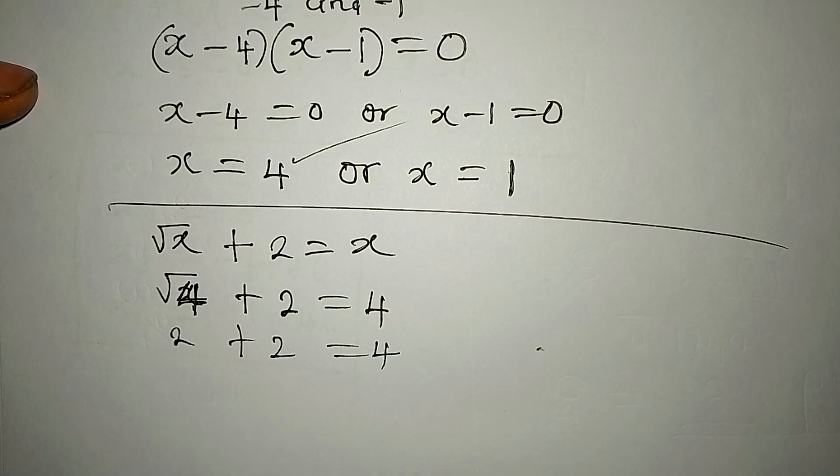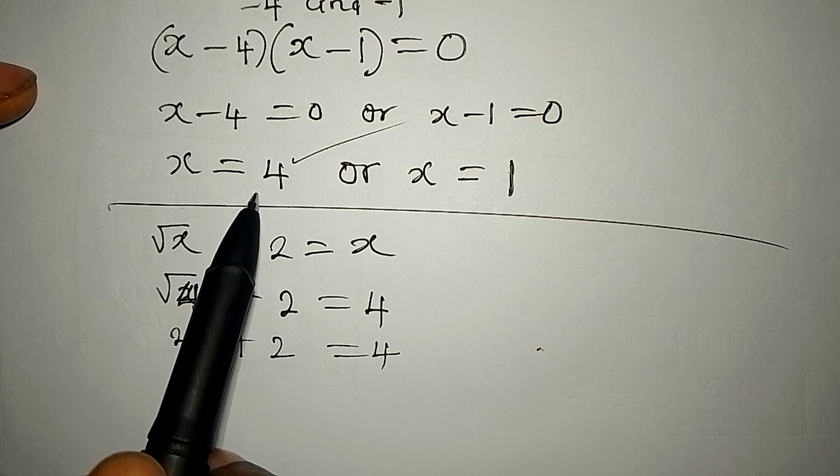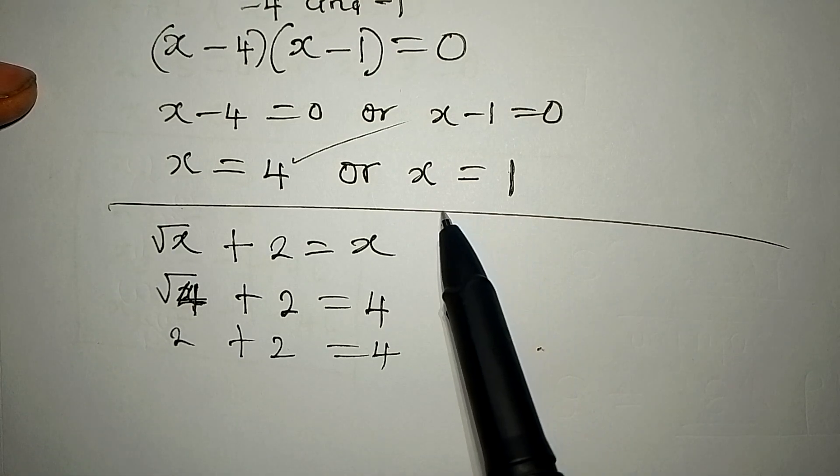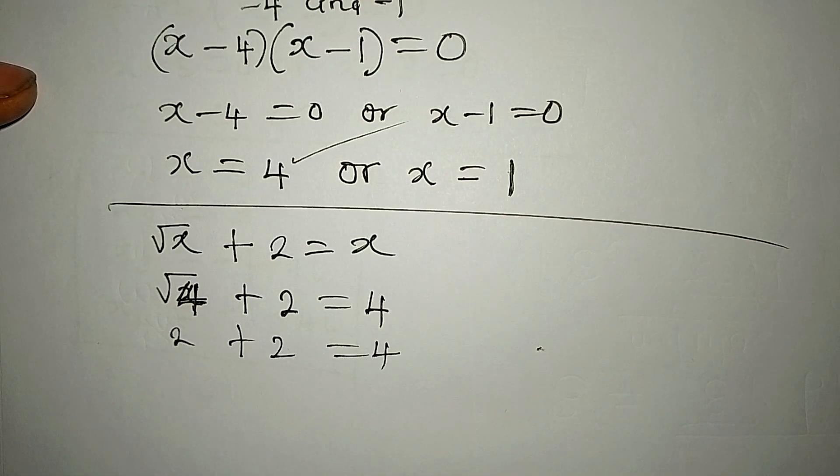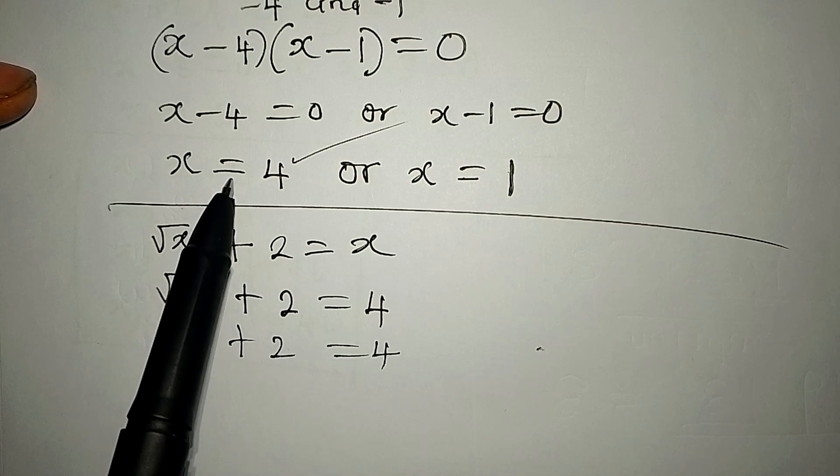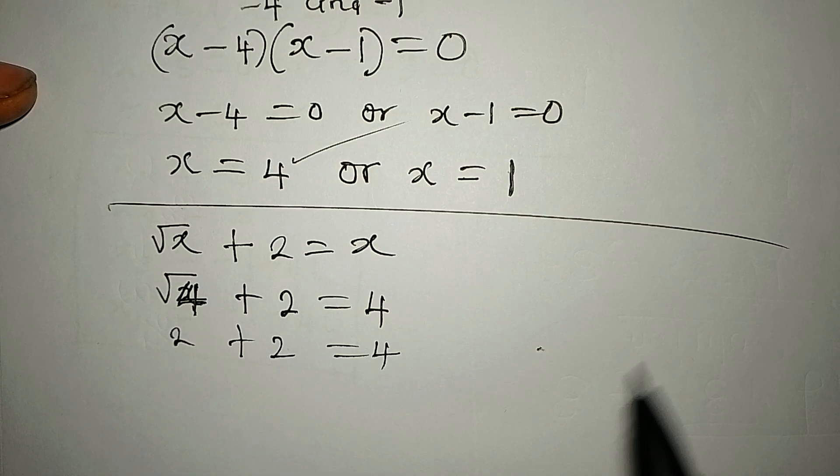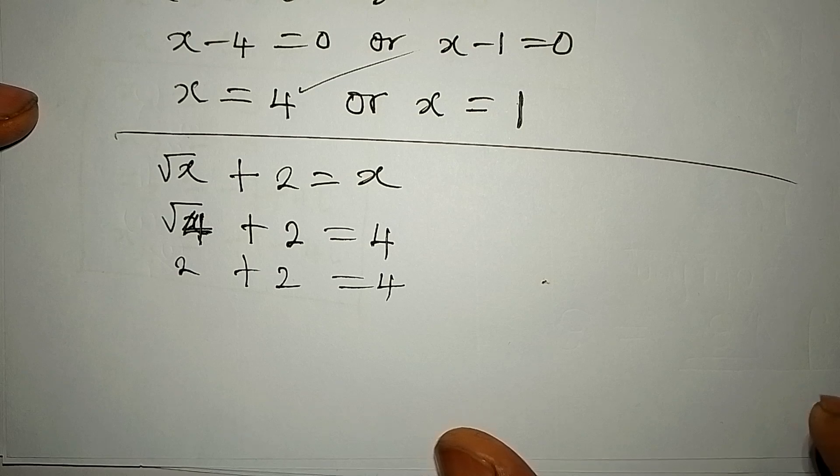Now let's put 1. By the way, you should already know that since x equals 4 satisfies, x equals 1 cannot satisfy because both of them are positive. Now let's put it to clear our doubt.